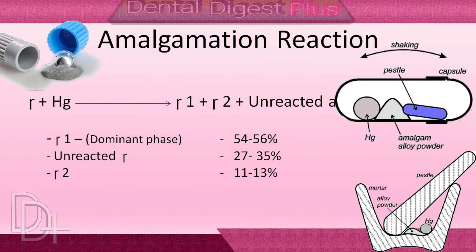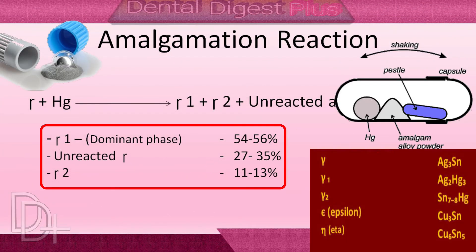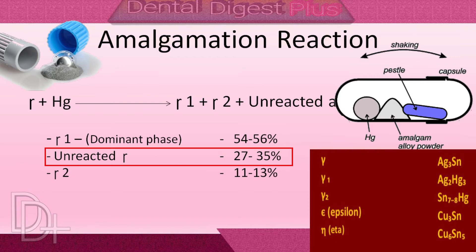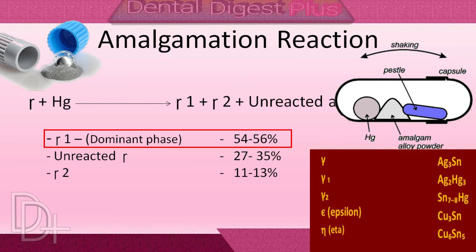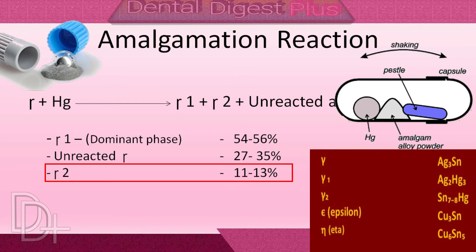When the alloy is mixed with mercury, three phases occur in the case of low-copper alloy particles. First, the gamma phase, which is the silver-tin alloy phase — this phase is the strongest with the least corrosion. Second is the gamma-1 phase, which consists of mercury reacting with silver, and it is not as strong as the gamma phase. The gamma-2 phase consists of mercury reacting with tin; it is a weak phase and tends to corrode easily.